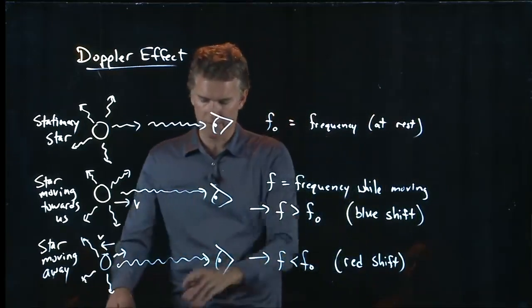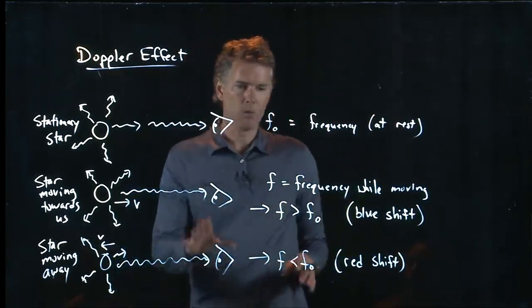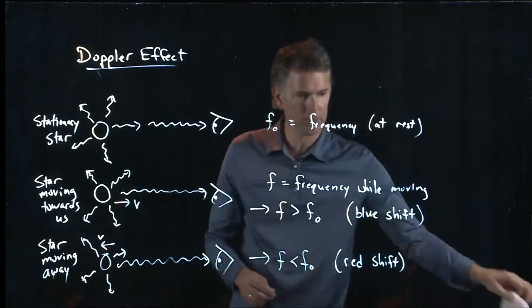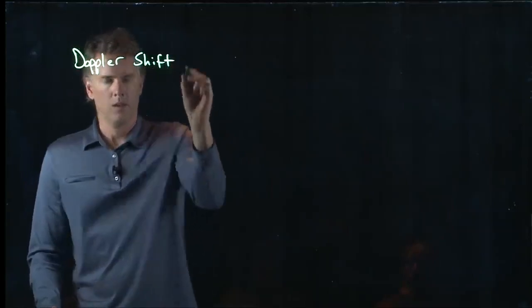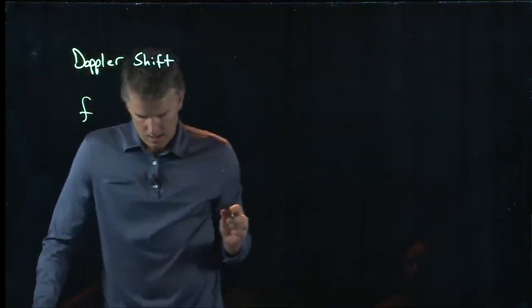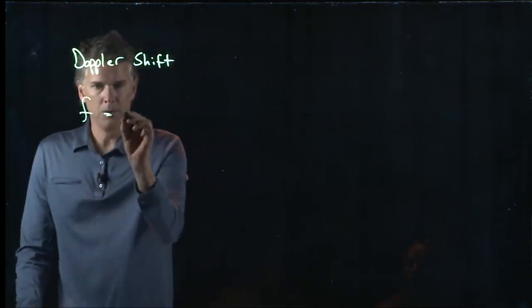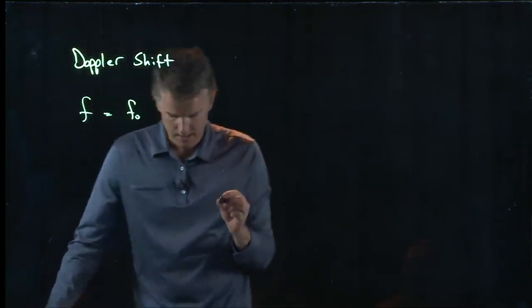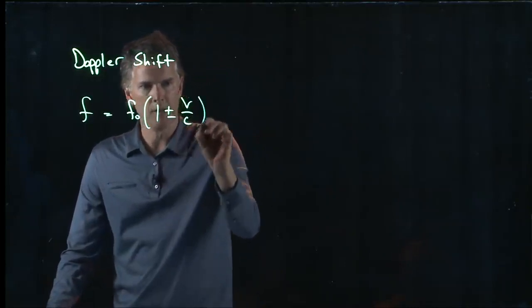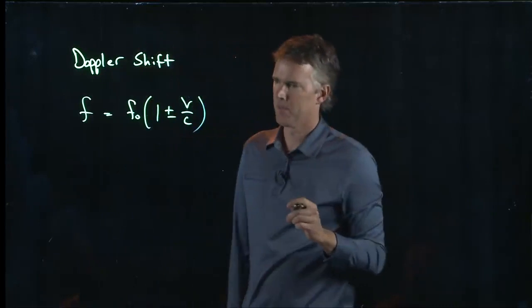Now how does all this stuff tie together? How do we actually calculate the Doppler shift for different moving objects? So the equation that we need is the following. F is equal to F naught times 1 plus or minus V over C.